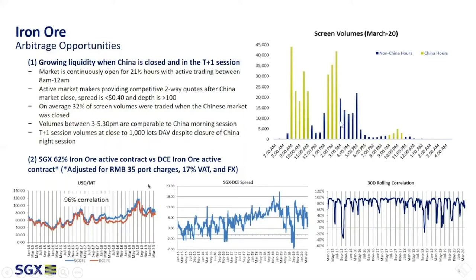The T+1 session interestingly accounted for quite a lot of volumes throughout the COVID-19 crisis when China actually closed their night session. At the bottom of the page you can see three charts looking at the actual spread and correlation analysis between SGX and DCE iron ore. These two markets are 96% correlated. The arbitrage mainly comes from the fact that there are different port charges, taxes, and the contracts being listed in different currencies. The actual spread is the middle chart, and you can see it could be quite volatile. Normally SGX trades at a premium to DCE, however occasionally this relationship breaks down.